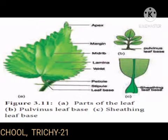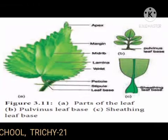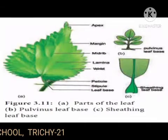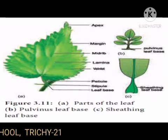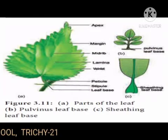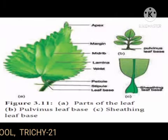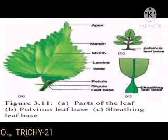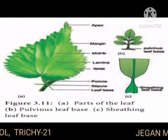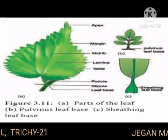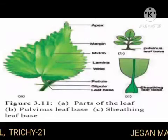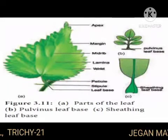Pulvinus: in leguminous plants, the leaf base becomes broad and swollen, which is known as pulvinus. Sheathing leaf base: in many monocot families such as Arecaceae, Zingiberaceae, Musaceae, and Poaceae, the leaf base extends into a sheath and clasps part or whole of the internode. Such leaf bases also leave permanent scars on the stem when they fall.